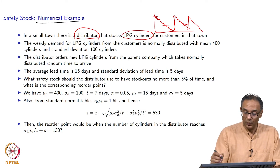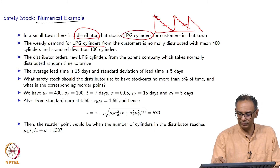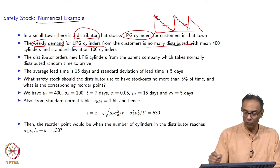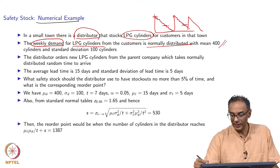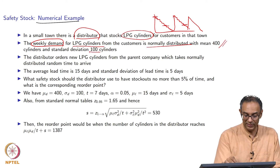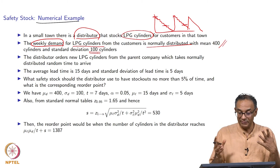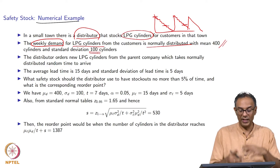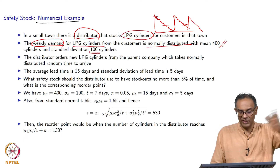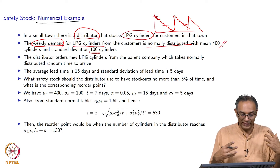We assume that demand for LPG cylinders is normally distributed. The weekly demand has a mean of 400 cylinders and a standard deviation of 100 cylinders. The demand is not exactly 400 but could range anywhere from 0 to about 800 for all practical purposes.